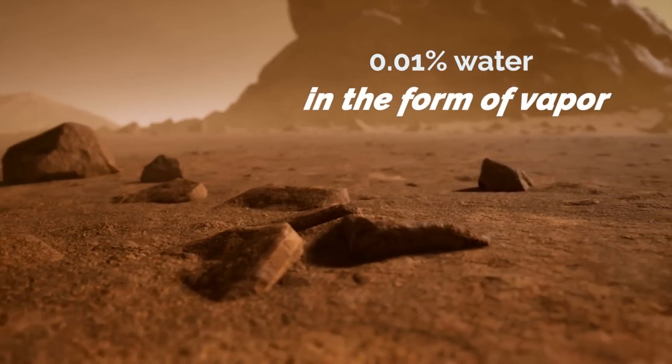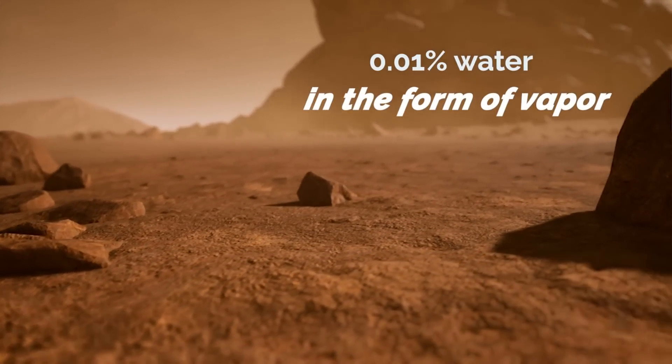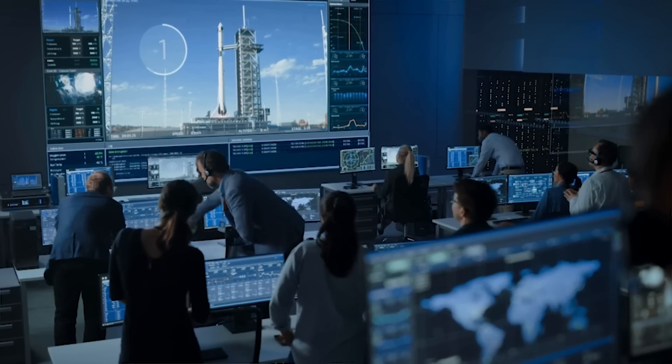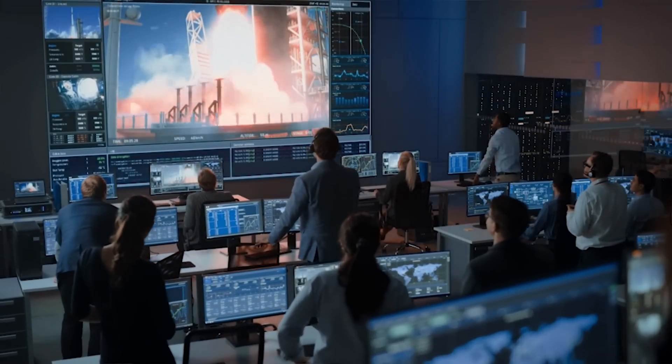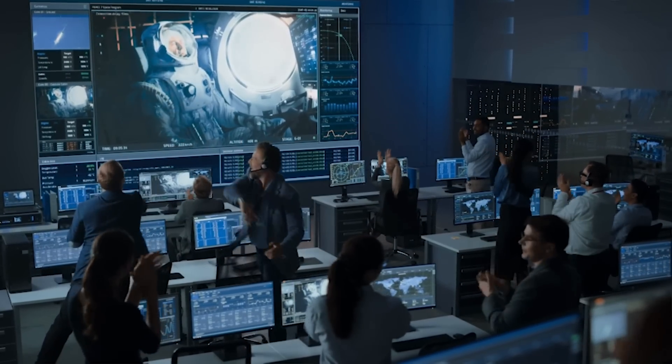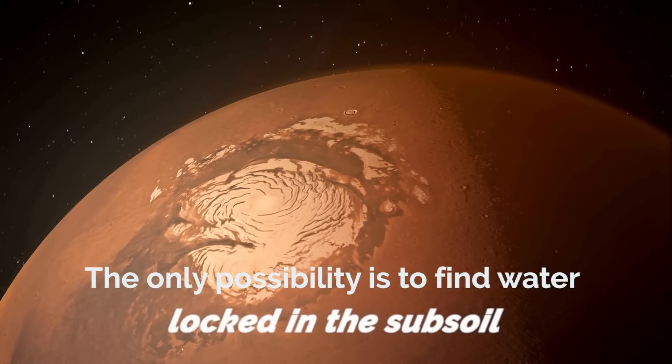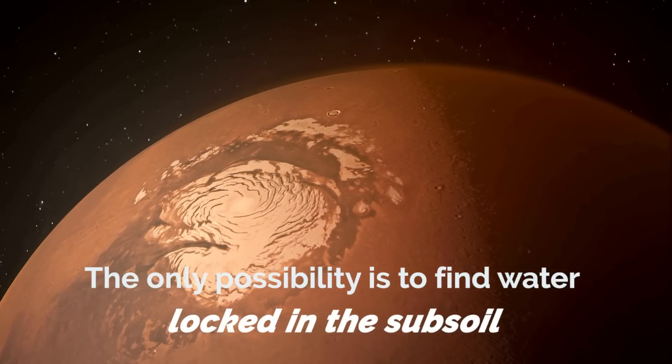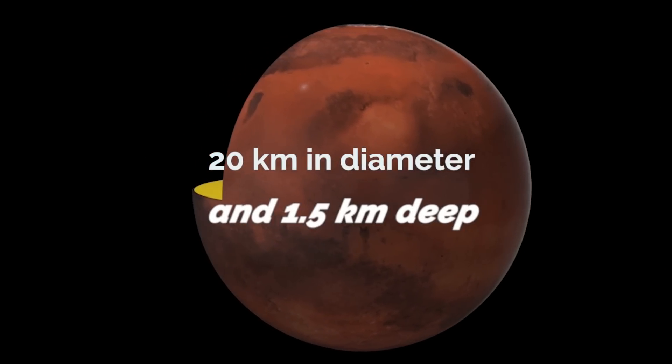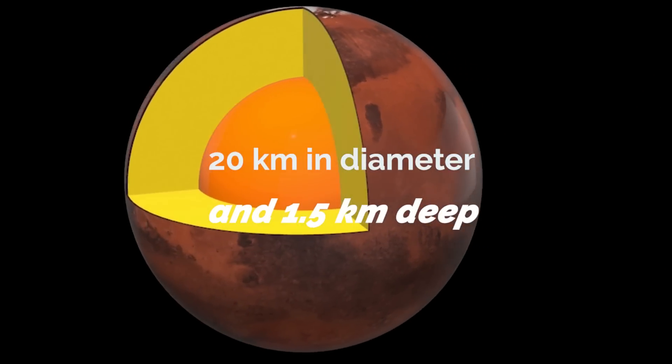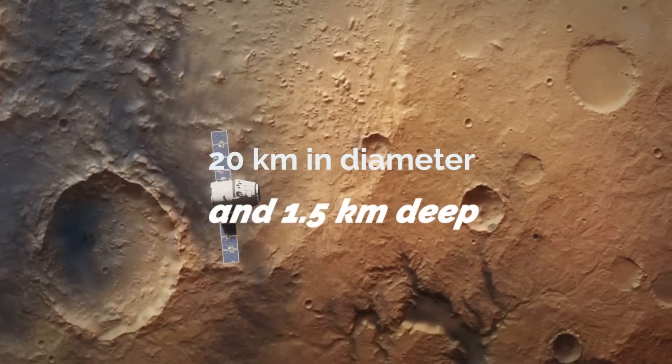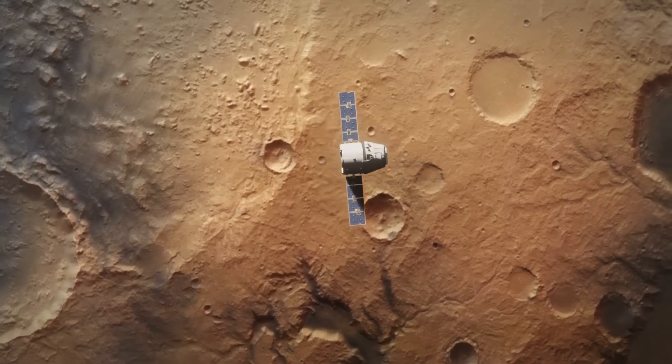Today, the atmosphere of Mars is estimated to have 0.01% water in the form of vapor, and it is known that there is also water ice in the subsurface. In July 2018, Italian researchers from the European Space Agency's ESA Mars Express mission announced the detection of an underground lake on Mars. Due to the climate of the Red Planet, liquid water can't be on its surface, so the only possibility is to find it locked in the subsoil. With about 20 km in diameter and 1.5 km deep under the Martian south polar ice, this lake's presence has been interpreted thanks to the veteran Marsis radar, operational since 2005, which has been readjusted to increase its sensitivity.